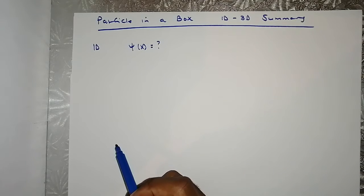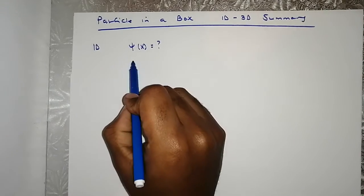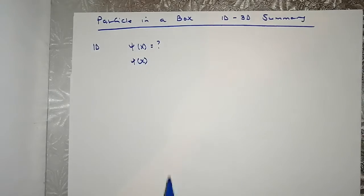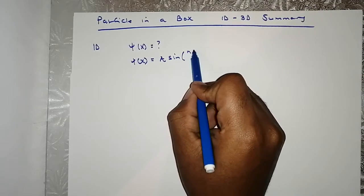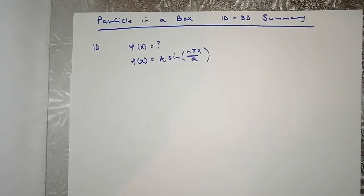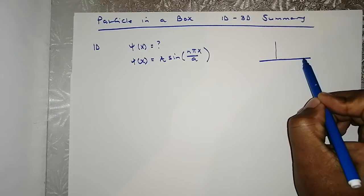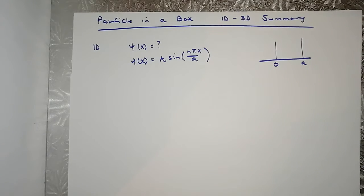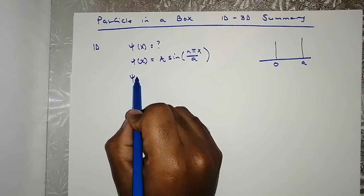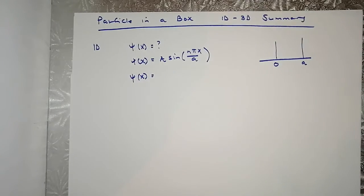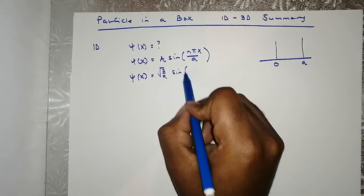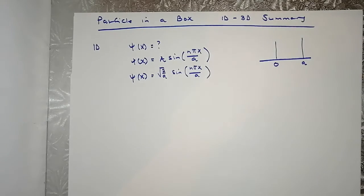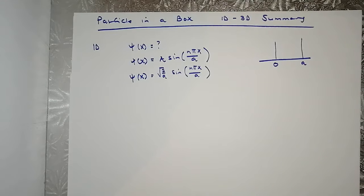I'm going to give a brief overview. In one dimension, we were able to find that the wave function of a one-dimensional particle in a box equals a sine of nπx divided by a, where a was the length — the box runs from zero to a. We normalized this wave function and found the normalization constant, giving us the normalized wave function as √(2/a) · sin(nπx/a).